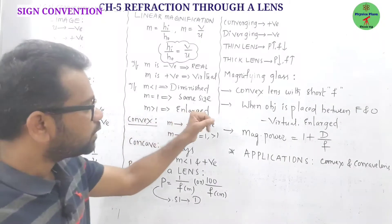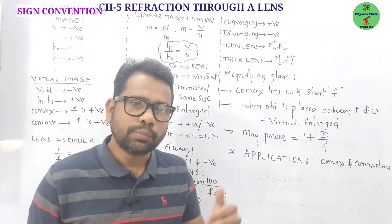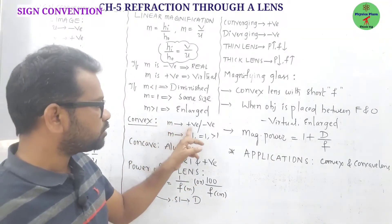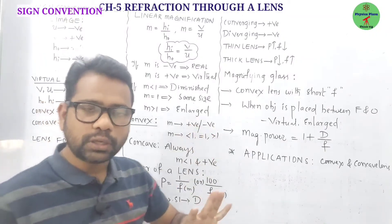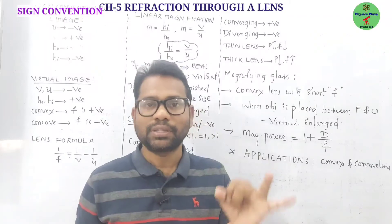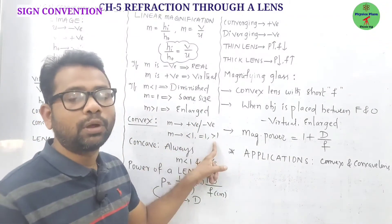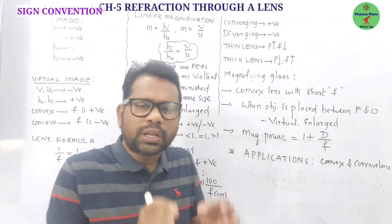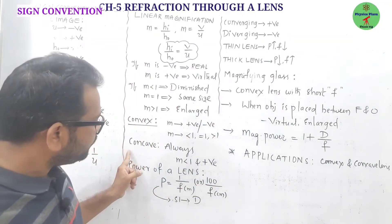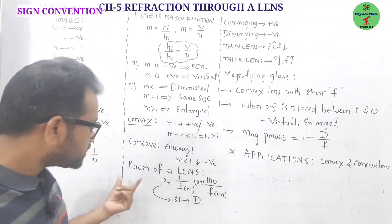For a convex lens, linear magnification can be positive or negative, and can be less than, equal to, or greater than 1, since it forms both real and virtual images of various sizes. For a concave lens, linear magnification is always positive and less than 1, since it always forms a virtual and diminished image.